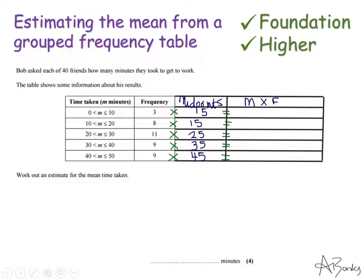So the three people that took five minutes each, that's 15 minutes. Eight people that took 15 minutes each is 120. Eleven people took 25 minutes each, that's 275. Nine people took 35 minutes each, that's 315. And nine people took 45 minutes each, that's 405. These are very often calculator questions.